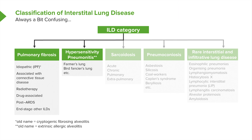The other categories include hypersensitivity pneumonitis. The commonest causes of that are farmer's lung and bird fancier's lung. These are immune reactions to inhaled antigens and represent a form of allergy.